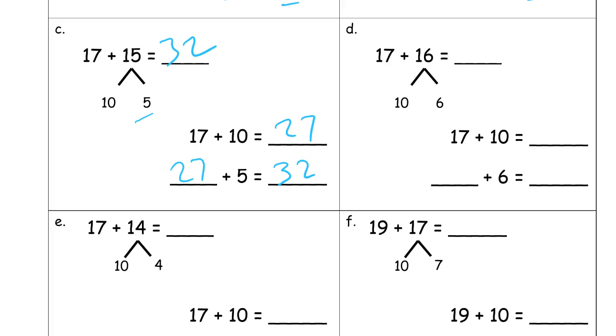17 plus 16. Split up the 16. Add the 10 first. 27. Take the 27, and then add the 6. And that's 33.